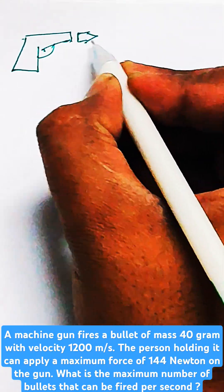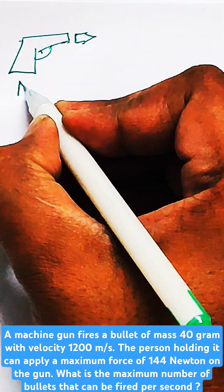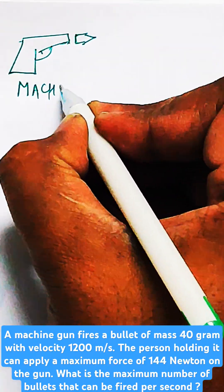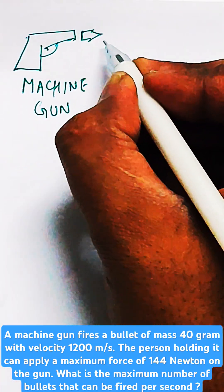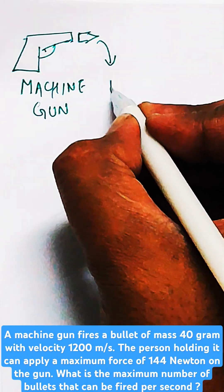The mass of each bullet is given as 40 grams and it is fired with a velocity of 1200 meters per second. So when the bullet exits the gun, it will go forward with a velocity of 1200 meters per second.